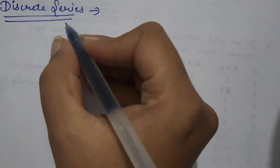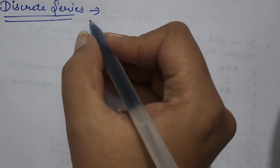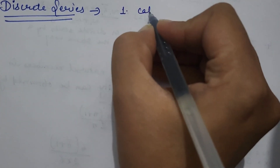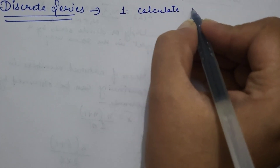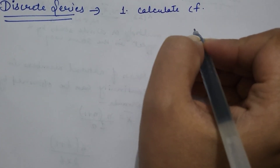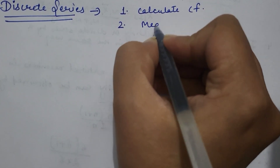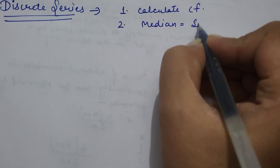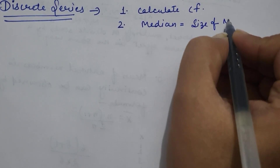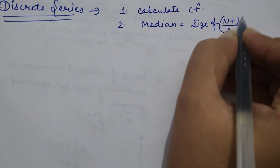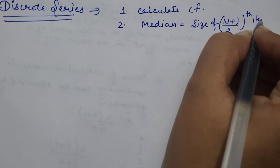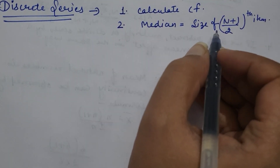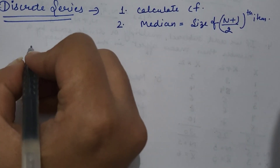Our next series is discrete series. To calculate median in discrete series, our first step is to calculate cumulative frequency. After that, we can compute median by applying the same formula — N plus 1 by 2th item — and then locate the median. With the help of an example, I can clarify.